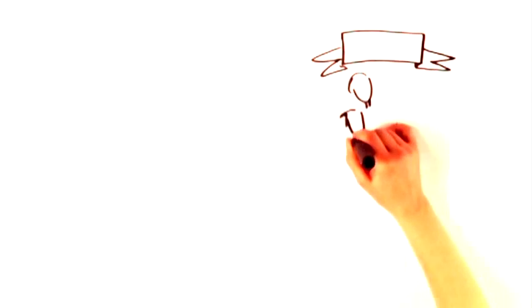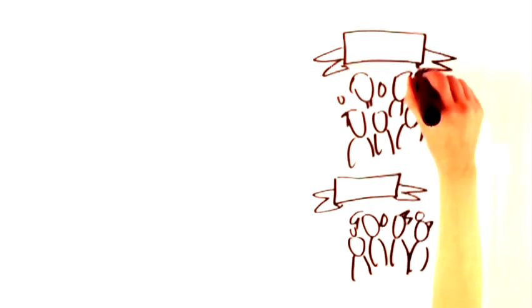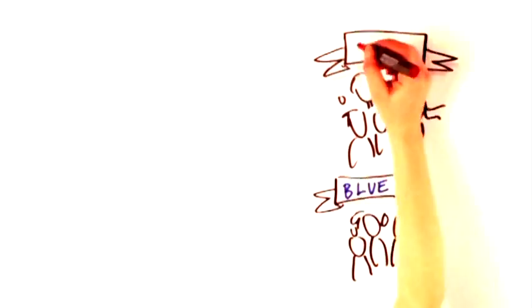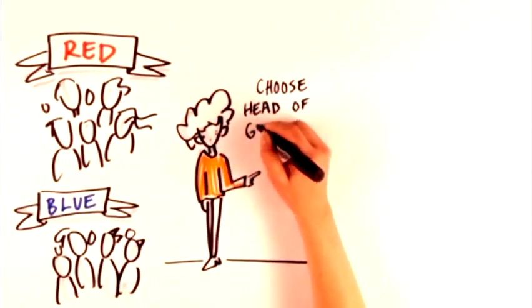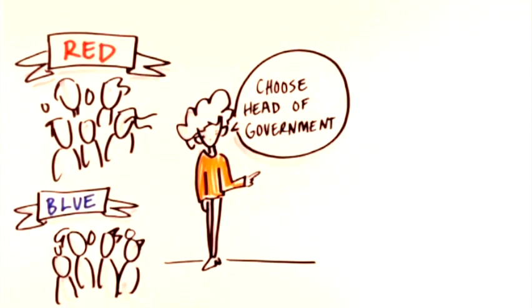But politicians in both countries didn't take long to form political parties. In Canada, parties made sense for two reasons. They helped elected representatives choose the head of government, who was generally the leader of the winning party.